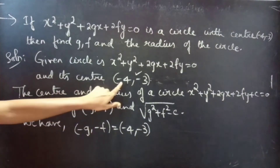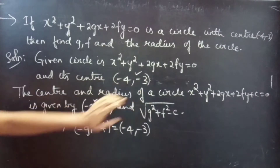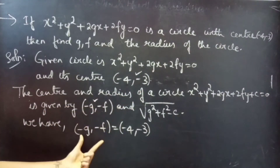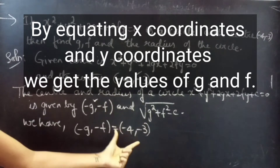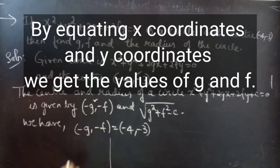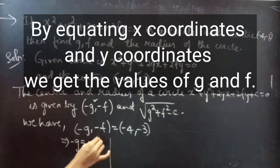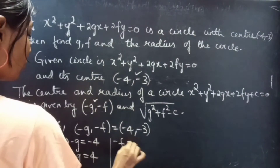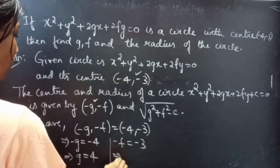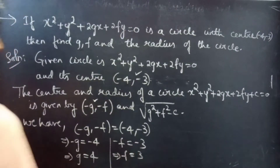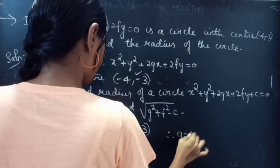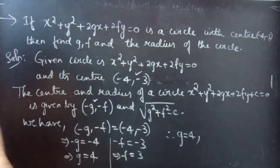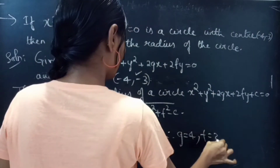We are given center (minus 4, minus 3), which means that center (minus g, minus f) equals to this. From this we will get: minus g equals to minus 4, then g equals to 4; and minus f equals to minus 3, then f equals to 3. So g equals to 4 and f equals to 3.